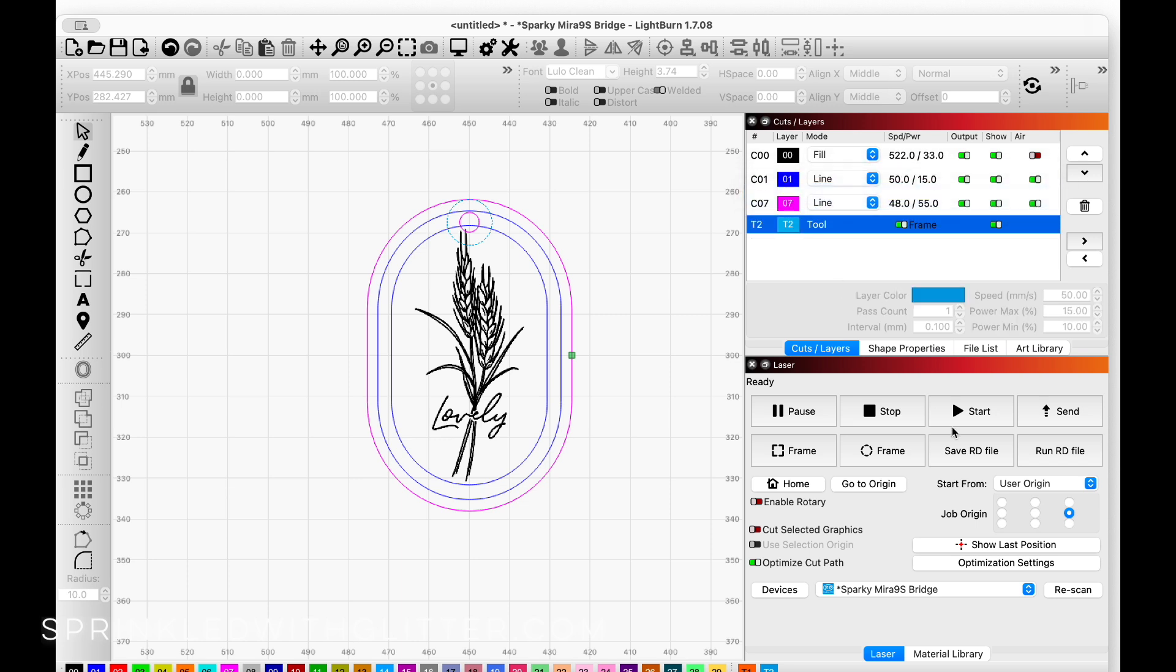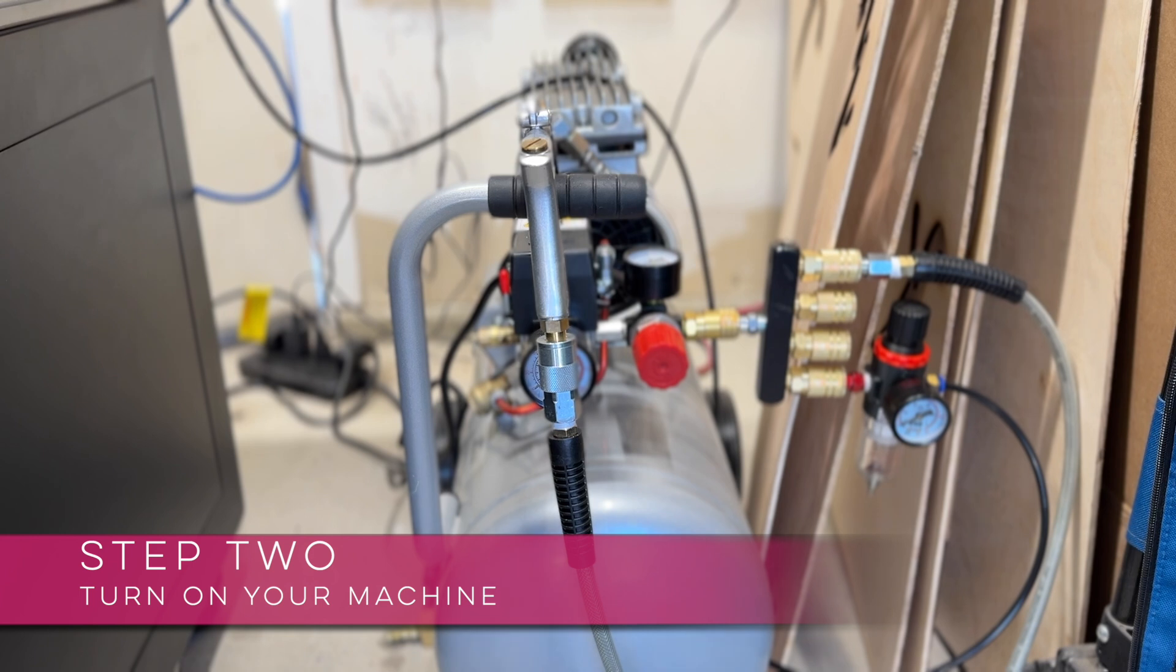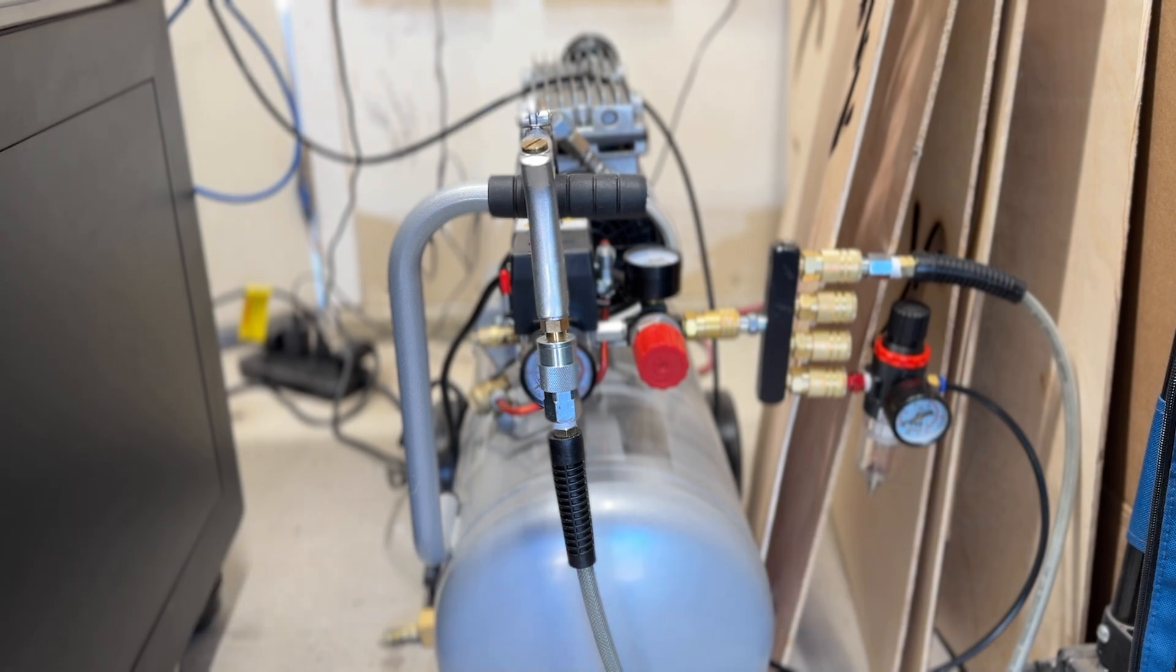Another part of preparing your file is setting your origin. I'm setting it to the upper right hand corner and now I'm ready for step number two which is to turn on your air if you're using it and turn on your laser.